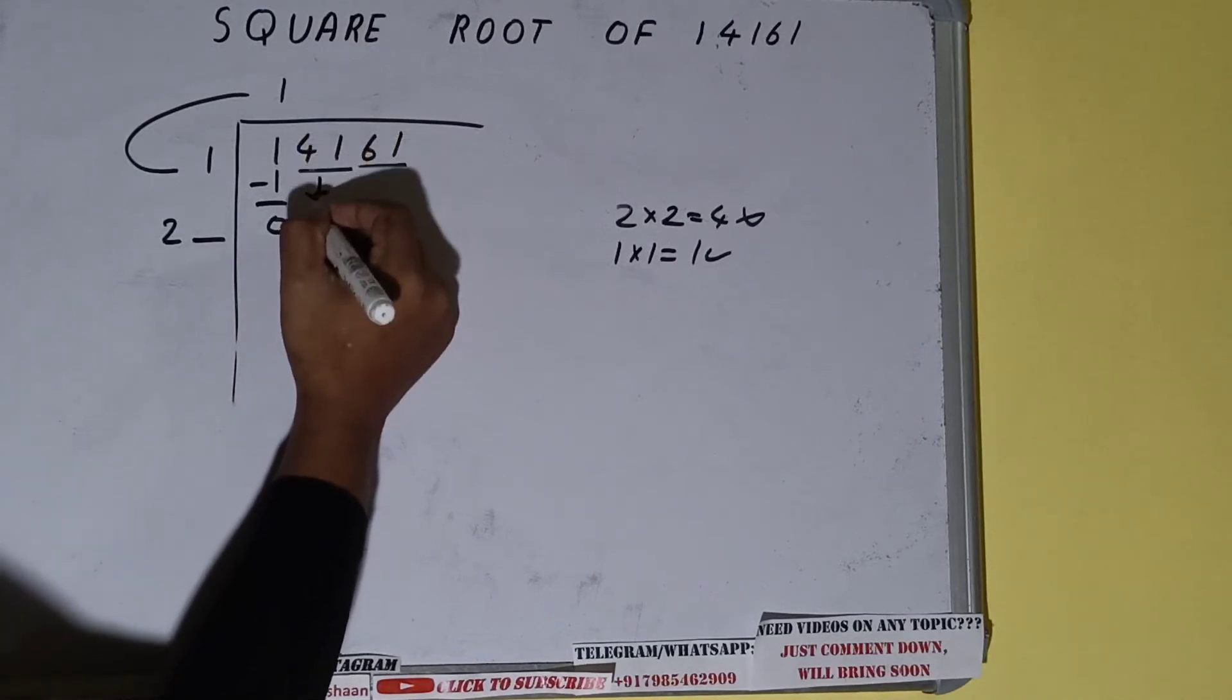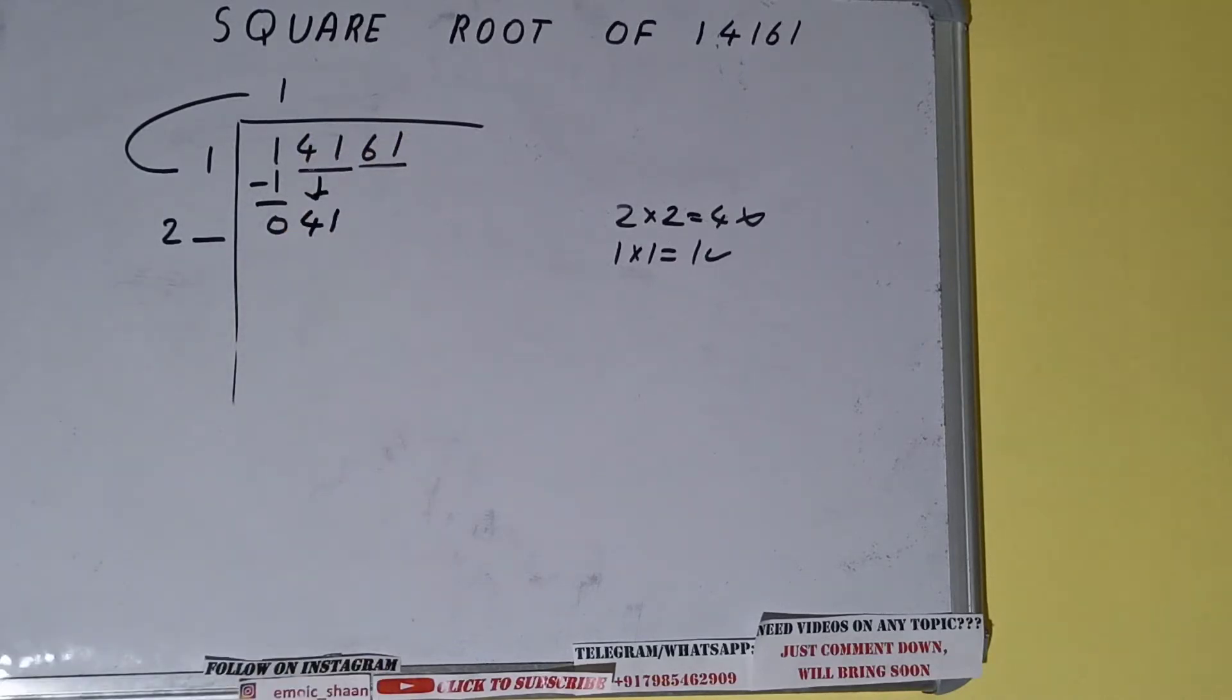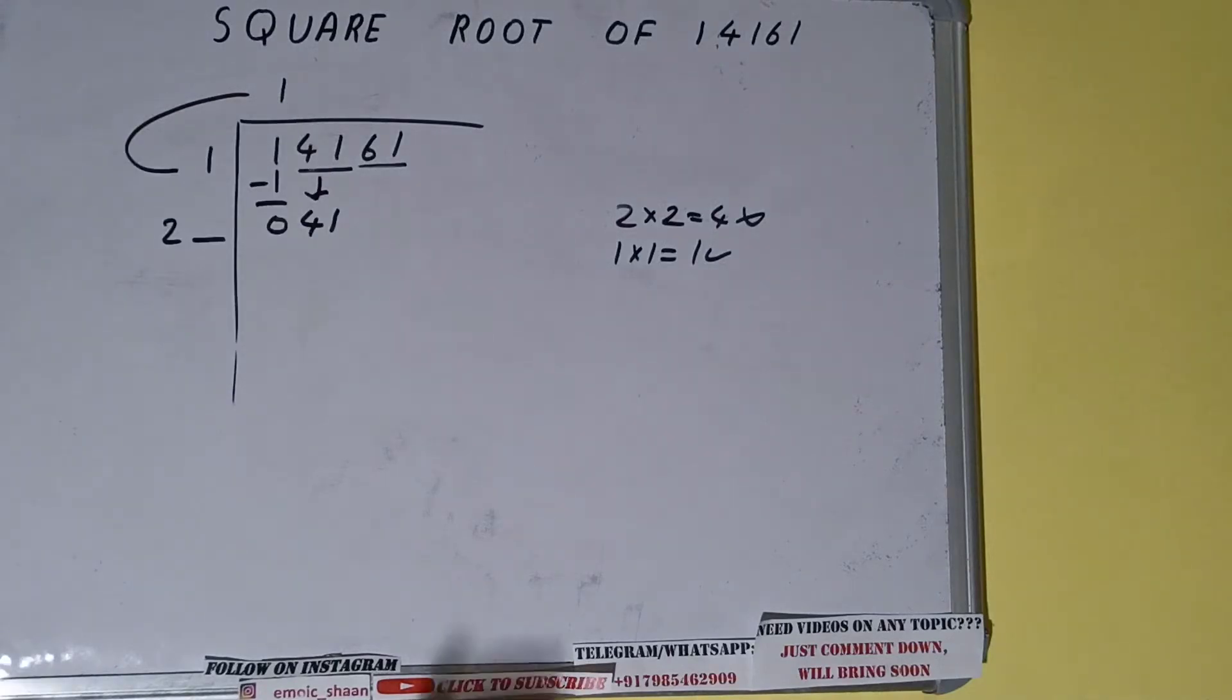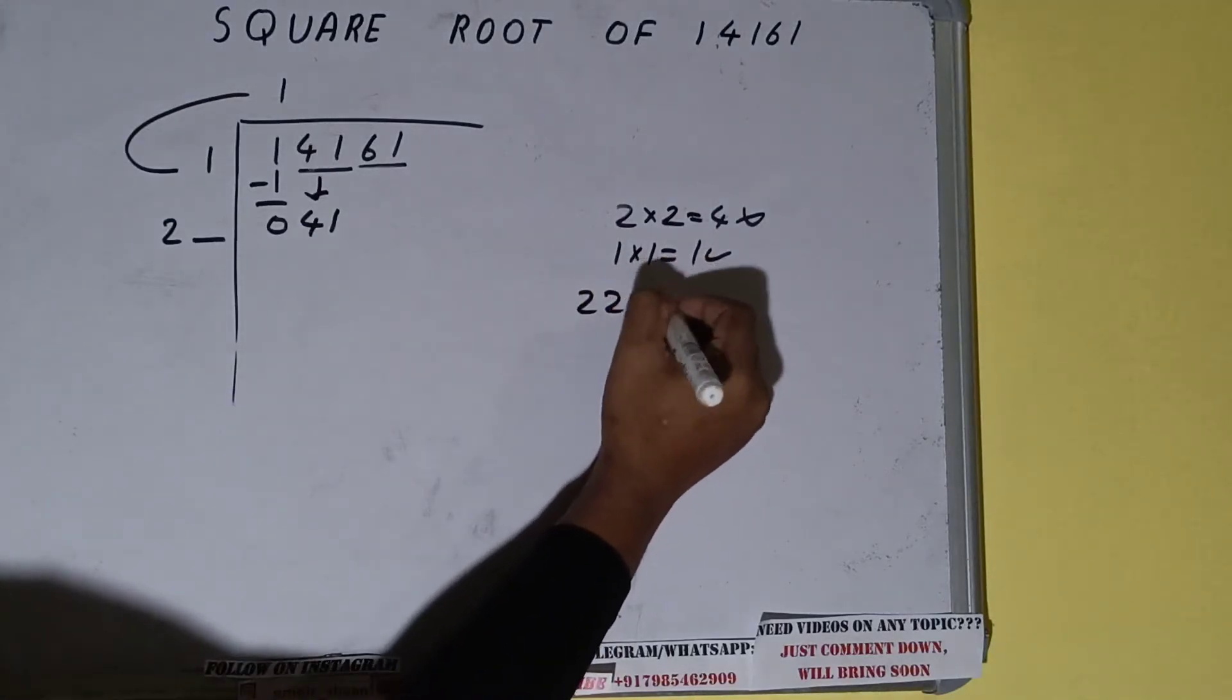Write it here and keep a digit extra, and this number we need to make it big. So bring the next pair down and it will become as 41. Now whatever number we write here, we have to write here also.